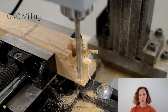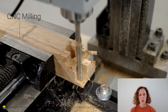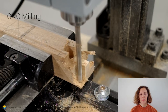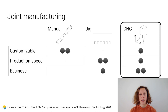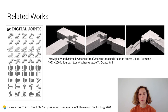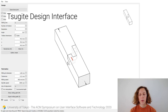Another technique is CNC milling. You feed x, y, and z coordinates from a computer to control a milling bit which moves accordingly and removes material. CNC milling, which is the fabrication technique we use for Tsugite, has some geometrical limitations, but it is relatively customizable, fast, and easy to use. There are related works presenting joint geometry suited for CNC fabrication; however, these are static 3D models of a limited number of joints. What we propose is a design interface for CNC-compatible joinery.